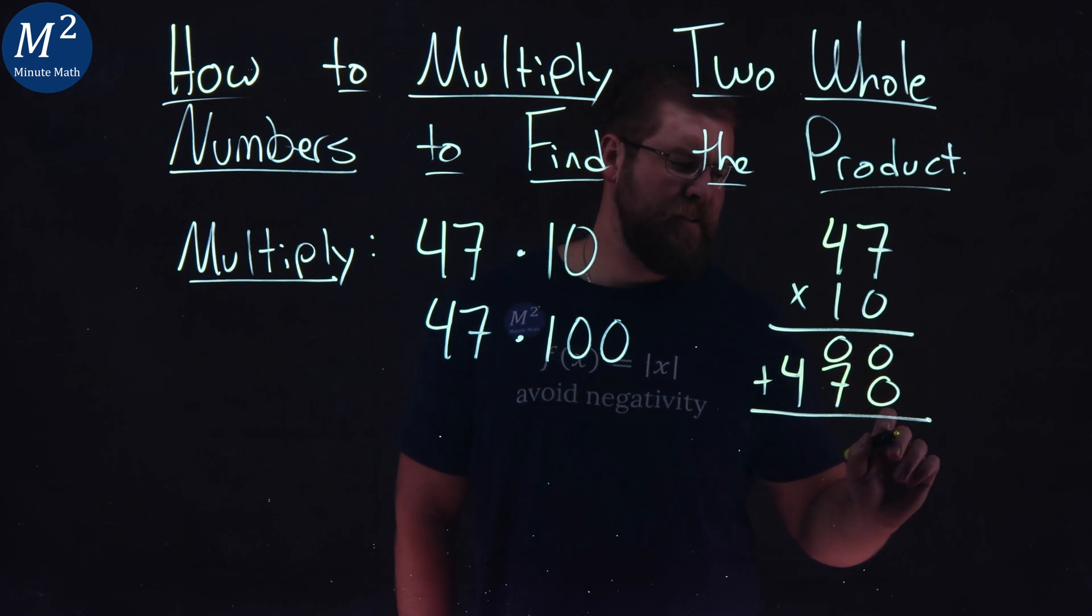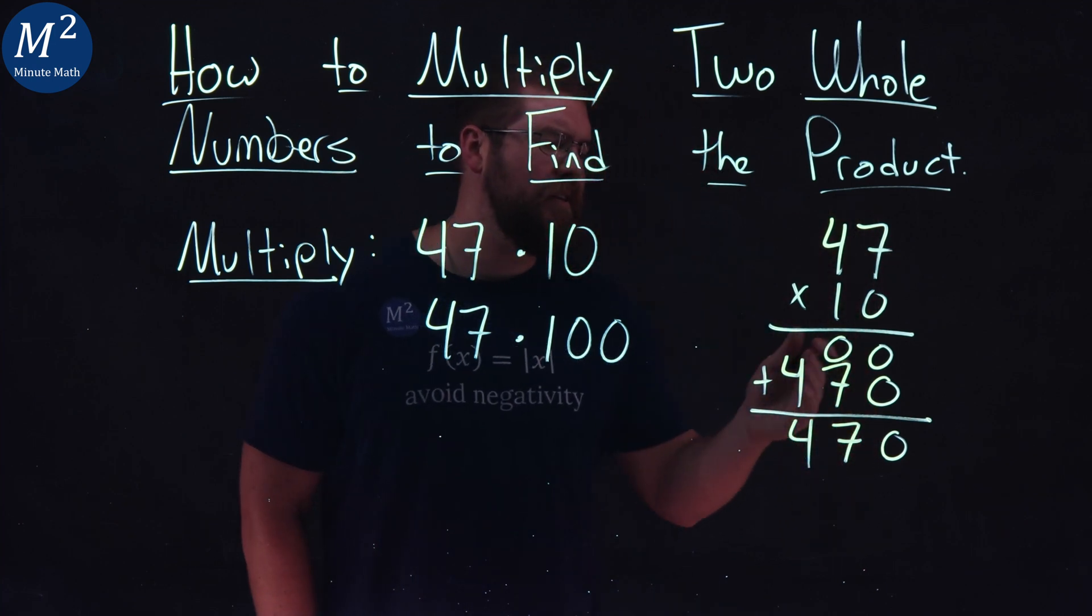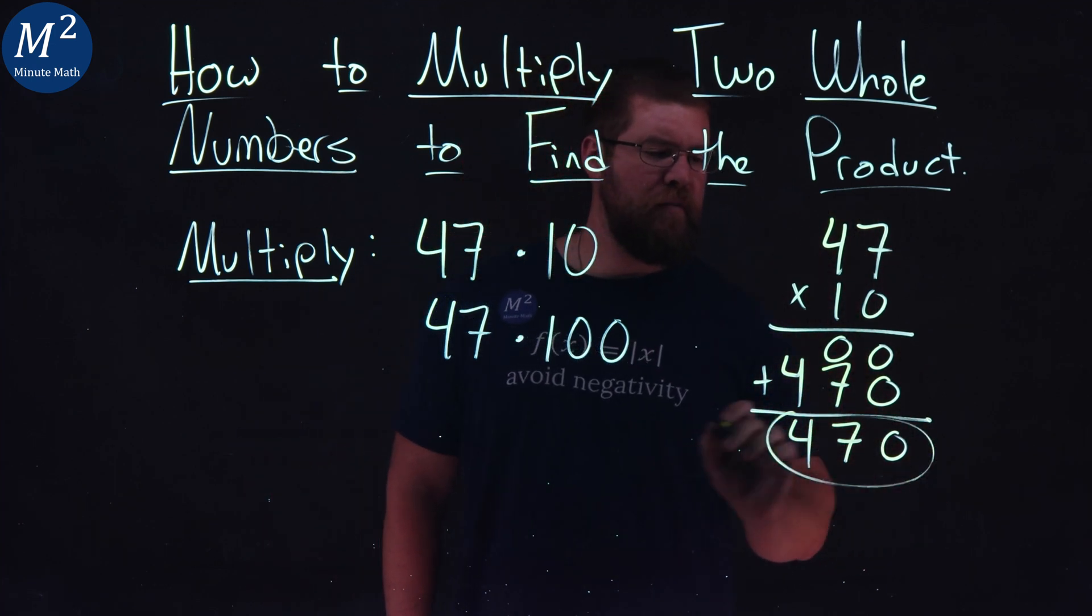Add these two numbers up. Zero plus zero is a zero. Zero plus seven is a seven, and four by itself is a four. So 47 times 10 is 470.